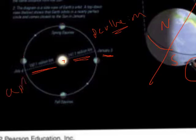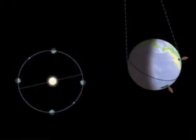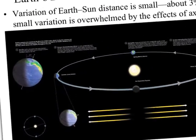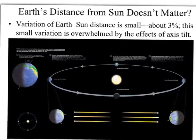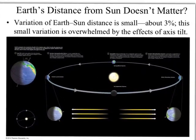Aphelion is when the Earth is farthest from the sun, and that happens around July 4th. So around June 21st — the summer solstice in the northern hemisphere — we're not closer to the sun; we're actually farthest. The small difference in Earth-sun distance really doesn't make much of a difference with regard to the heat we receive.